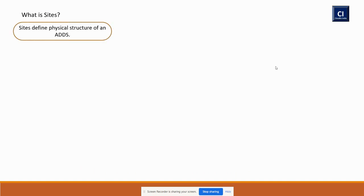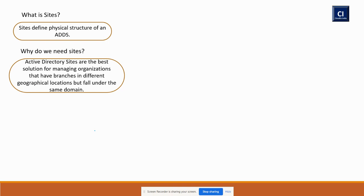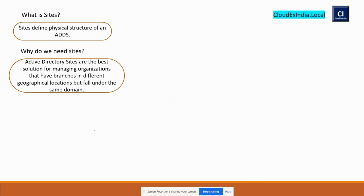The first thing — what is a site? Sites basically define the physical structure of Active Directory Domain Services. Why do we need sites? Sites are the best solution for managing an organization that has different locations but falls under the same domain. Take an example: cloudxindia.com has three different locations — India, US, and Sydney — and you want to manage all three under one domain.